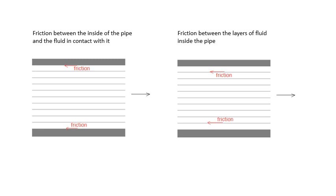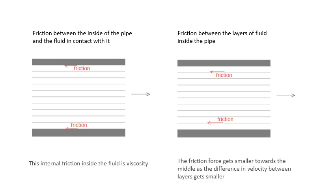This diagram shows this friction force, which is called a shearing force between the different layers of fluid inside the pipe. This internal friction inside the fluid is viscosity. That's what viscosity is: internal friction between the layers of fluid flowing through the pipe. The friction force gets smaller towards the middle because the difference in velocity between layers gets smaller.